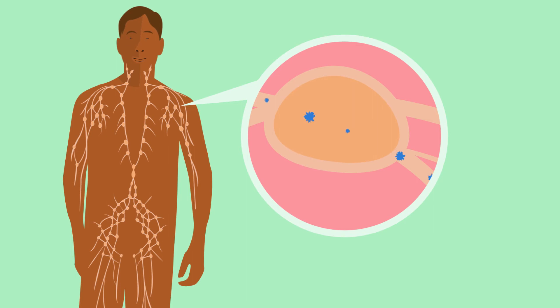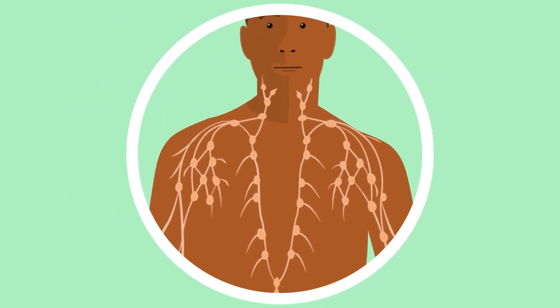Sometimes, cancer cells spread from where the cancer first started to other parts of the body. They can travel through the lymphatic system or the blood. When the cells reach another part of the body, they may begin to grow and form another tumour.